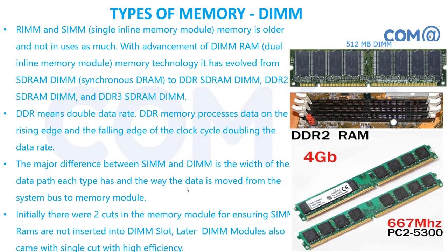Today we use DIMM — Dual Inline Memory Module — and DDR memory — Double Data Rate. DDR increases the data rate compared to earlier standards, allowing single modules of 4 GB, 8 GB, or 16 GB with improved frequency. DDR DIMM has a dual-cut design. When motherboards had both SIMM and DIMM slots, manufacturers provided two cuts to avoid confusion. Now that SIMM slots are no longer used, manufacturers provide only one cut — positioned off-center so you cannot reverse the connection and damage the module.